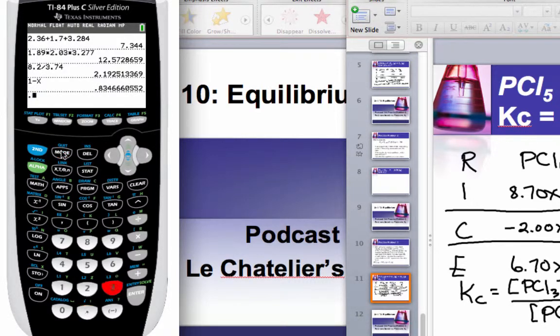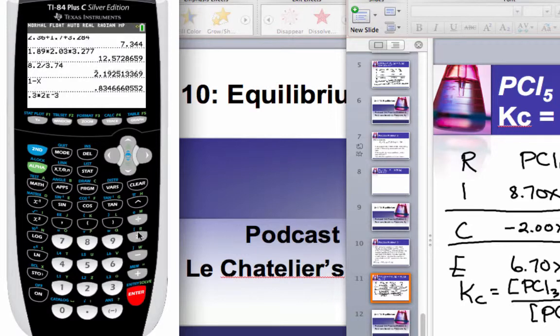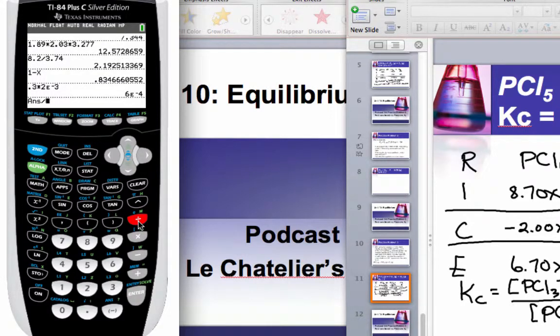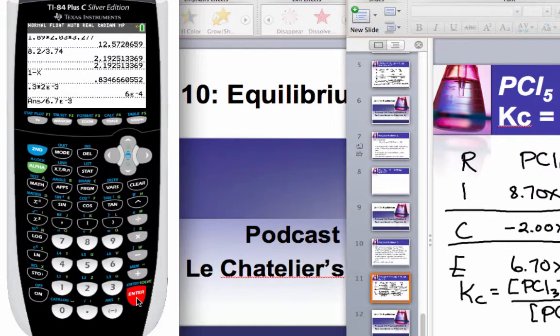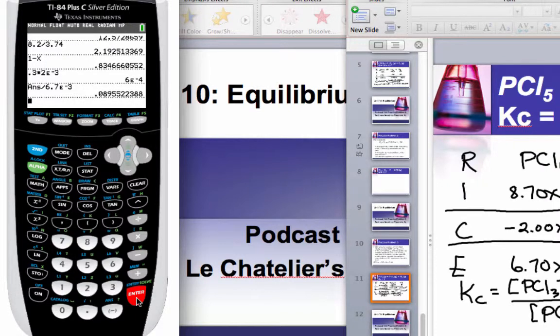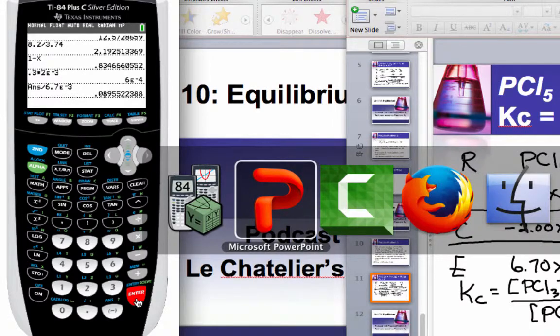So 0.3 times 2 times 10 to the minus 3, divided by 6.7 times 10 to the negative 3, and that gives us 0.089555. How many sig figs do we get? 3.